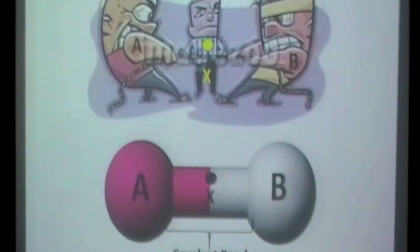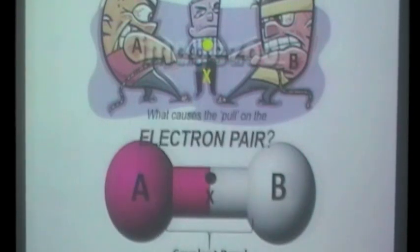Effectively we've got atom A attracting this pair of electrons towards itself and it's in competition with atom B attracting the same pair of electrons towards itself. So we just have a think about what's causing that pull on the electron pair.